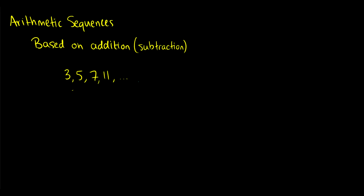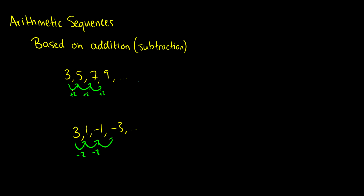Now we're going to talk about a specific type of sequence: an arithmetic sequence. These are sequences where the next term is always generated based on either addition or subtraction. So in this case we have 3 plus 2 is 5, 5 plus 2 is 7, 7 plus 2 is 9, and this goes on forever. Another sequence based on addition or subtraction might be 3, 1, negative 1, negative 3, and so on, where instead of adding 2 we simply subtract 2. Yes, these numbers can be negative — that's okay.